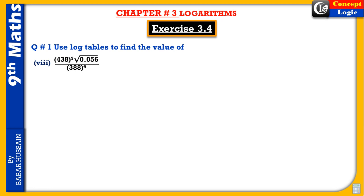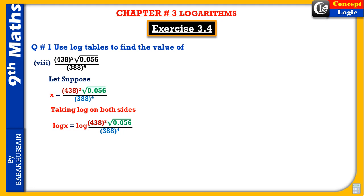Question number one's last part: solve using logarithm tables. The expression involves 438 raised to power 3, multiplied by 0.056 under root, divided by 388 raised to power 4. Let x equal this expression and take log on both sides: log x = log(438³ × √0.056 / 388⁴).